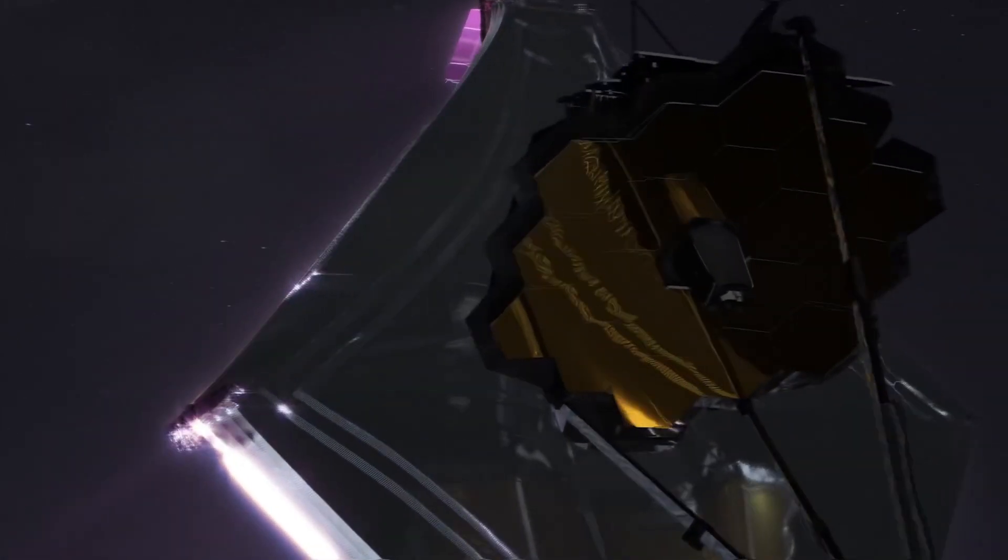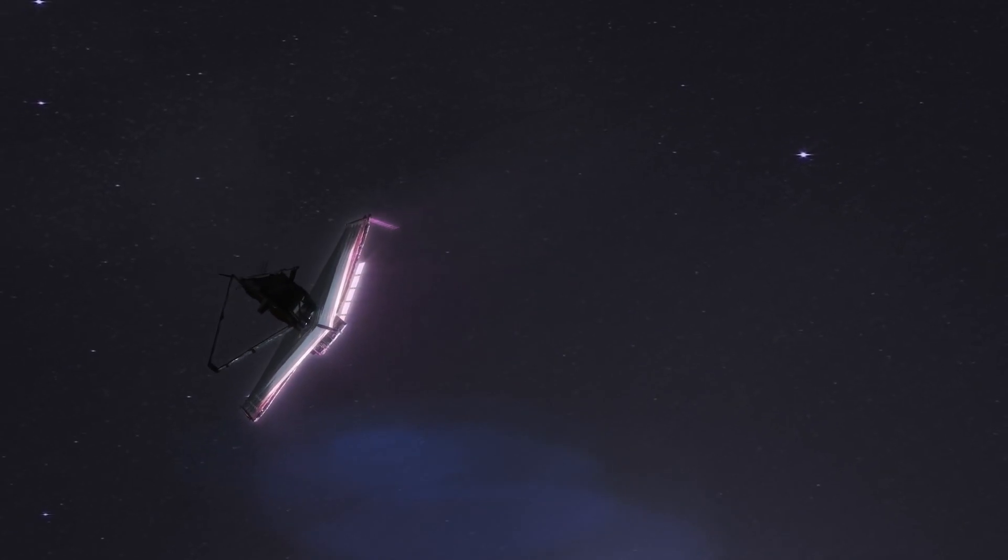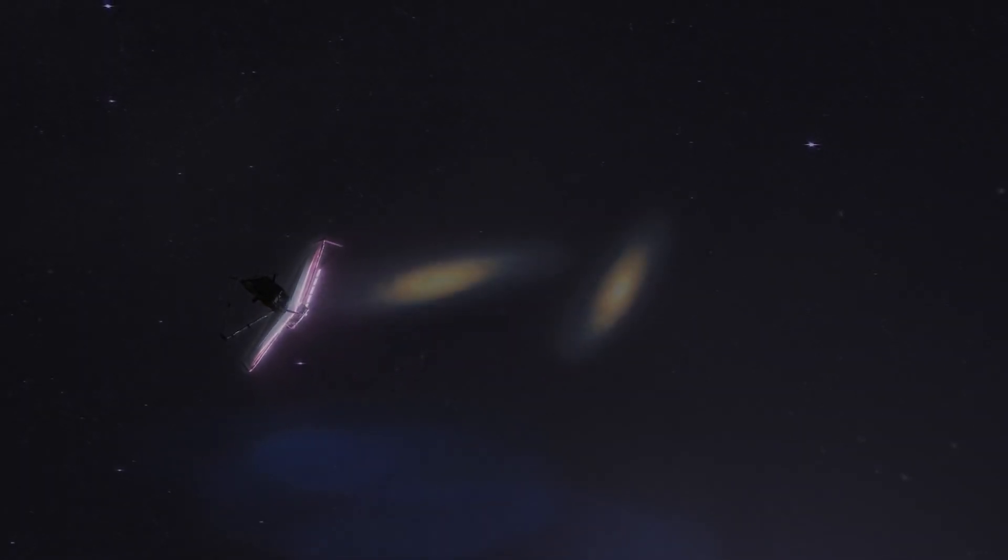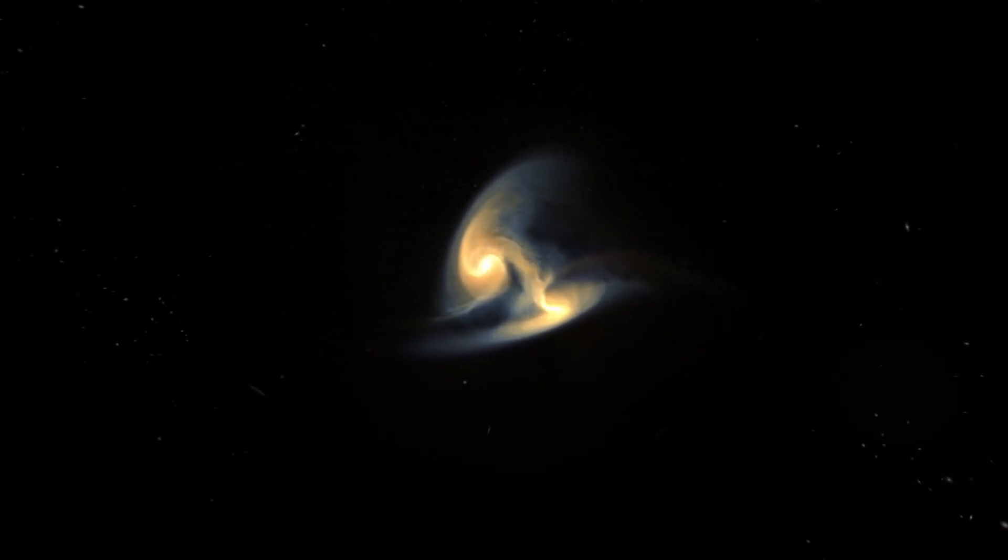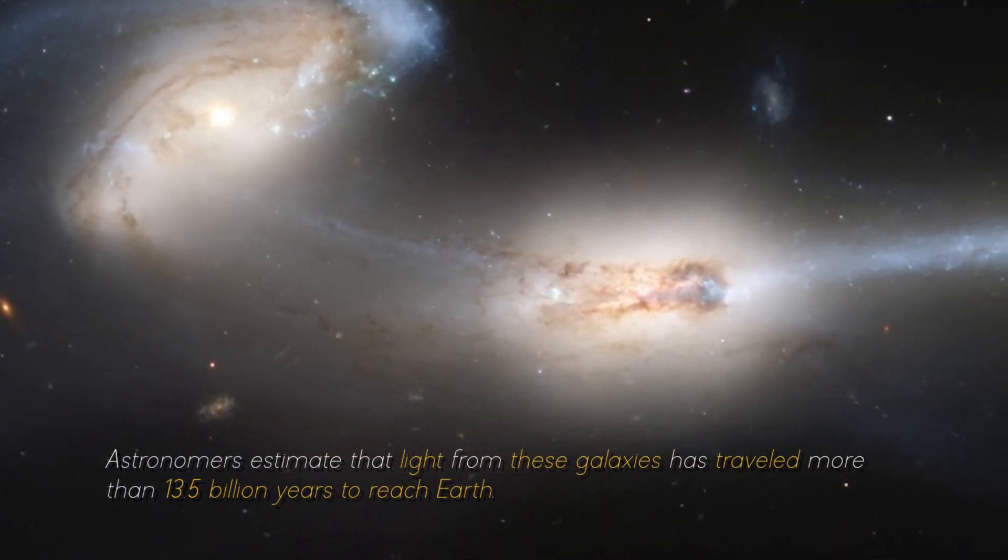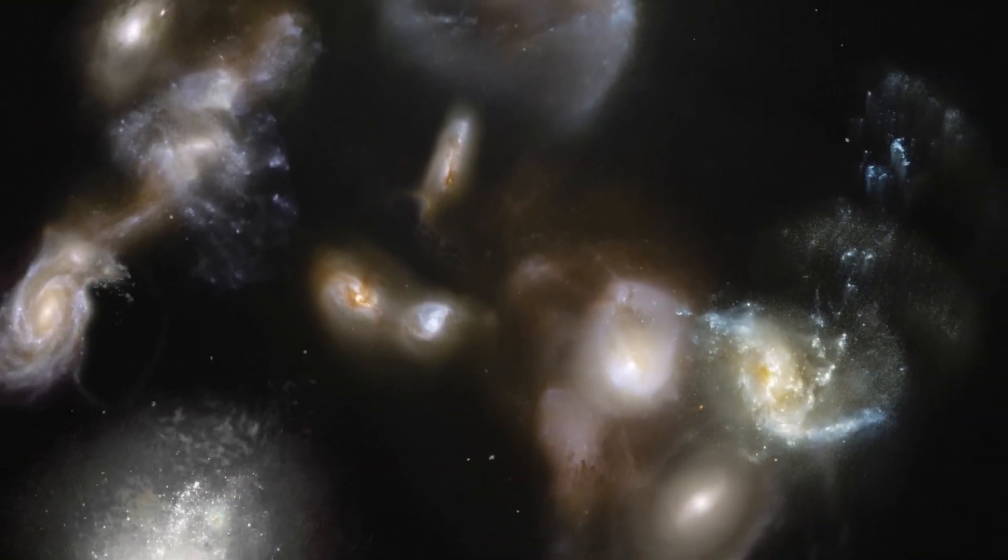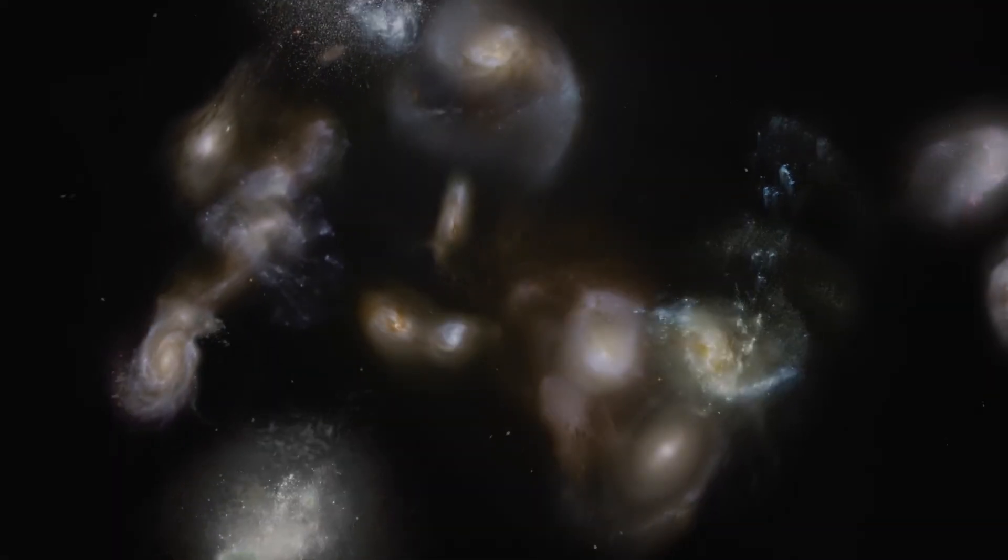Amazingly, the James Webb Space Telescope confirmed that these ancient galaxies are real. Thanks to this revolutionary telescope, we can now observe the oldest galaxies ever seen. Astronomers estimate that light from these galaxies has traveled more than 13.5 billion years to reach Earth, giving us a glimpse into the distant past of the universe.